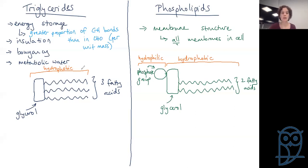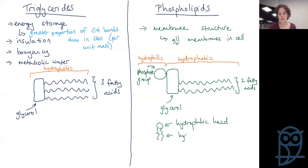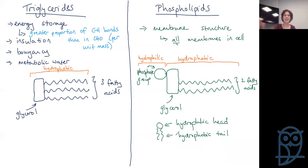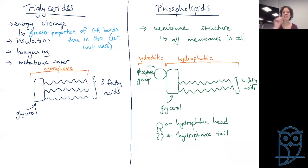In a triglyceride we maximize energy storage; in a phospholipid we want this charge difference — hydrophilic and hydrophobic. We simplify it by drawing a hydrophilic head and a hydrophobic tail. If you put a whole lot of these into an aqueous environment, the hydrophobic tails say they don't want the water, so all tails sit together, while the hydrophilic heads are happy to face the water outside. This is how we get that bilayer structure we see in cell membranes.